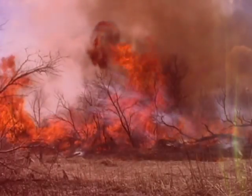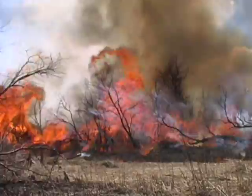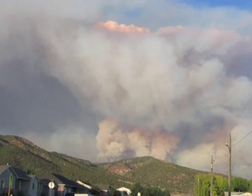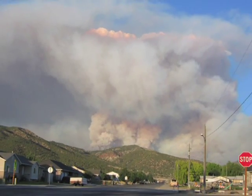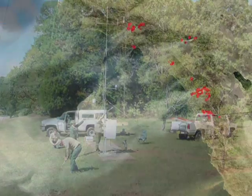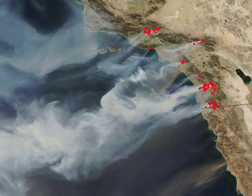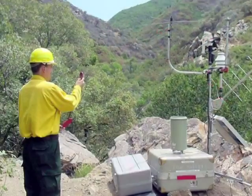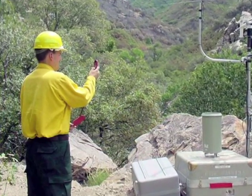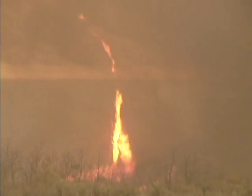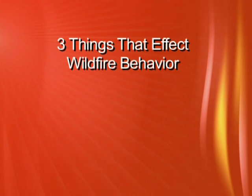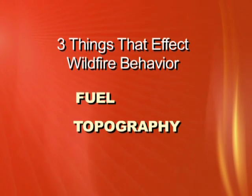So far we have discussed what is needed to create and sustain a fire, and how fire or heat is transferred. Now we will go over the three things that influence fire behavior. The wildfire environment is always changing. Fire specialists have done significant research to better understand wildfire behavior, and although they cannot consistently predict it accurately, the three things that affect wildfire behavior are fuel, topography, and weather.